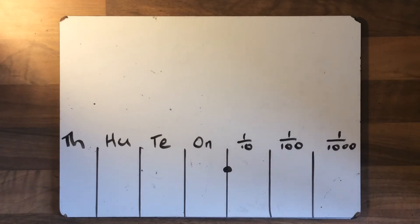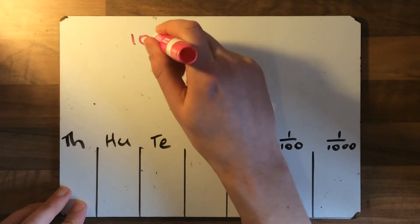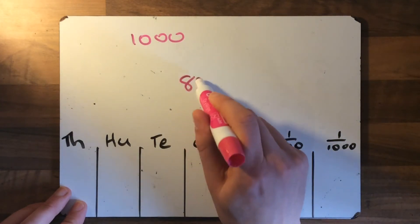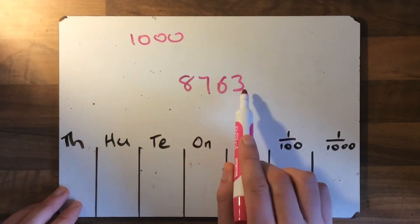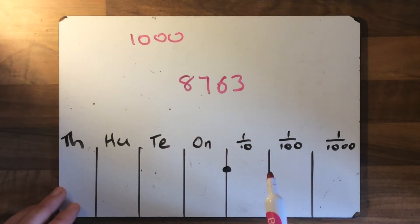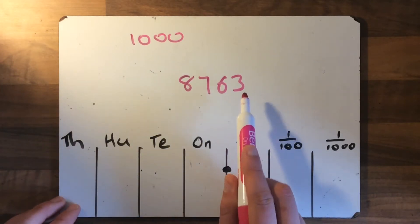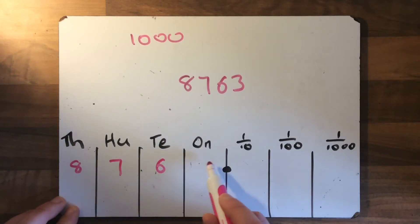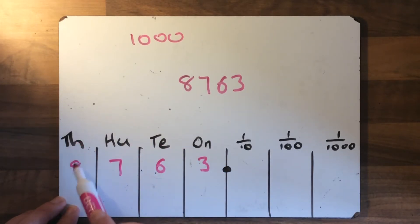So if I had a question that said round to the nearest thousand — we're going to round this number to the nearest thousand. If I had the number 8,763 and I'm rounding to the nearest thousand, which of these numbers is in the thousands column? Hopefully you can all spot that straight away and see that it's the eight. If I was to write this number in here, you can see it is the eight — because that three is in the ones, six is in the tens, seven is in the hundreds, and eight is in the thousands.